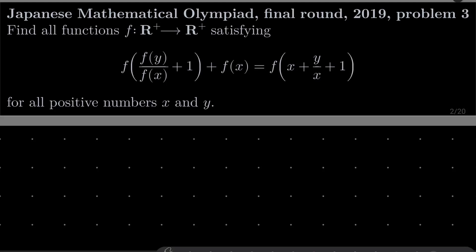Hello friends. In this video I'd like to solve the following problem from the Japanese Mathematical Olympiad final round 2019, problem number three. We wish to find all functions f from the set of positive real numbers into itself satisfying this functional equation: f(f(y) / (f(x) + 1)) + f(x) = f(x + y/(x+1)) for all positive numbers x and y.